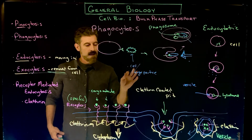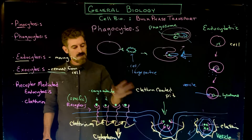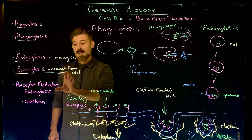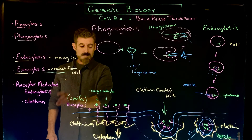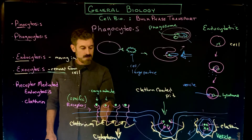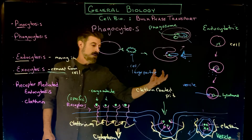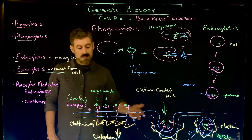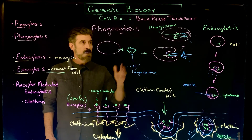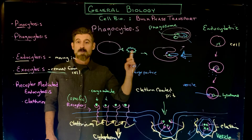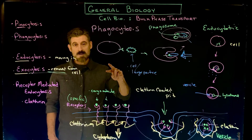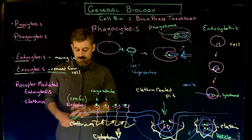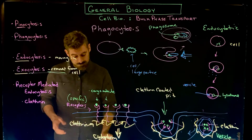In summary, look specifically at the details of receptor-mediated endocytosis: receptors bind cargo, clathrin forms the pit, the pit pulls inward to form a vesicle, it's uncoated, and the membrane can be recycled. For the others, know the basic terminology: endocytosis versus exocytosis, and pinocytosis versus phagocytosis.